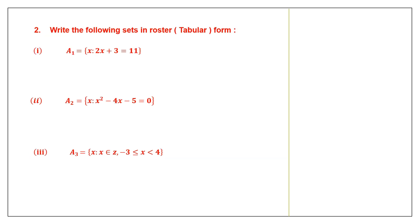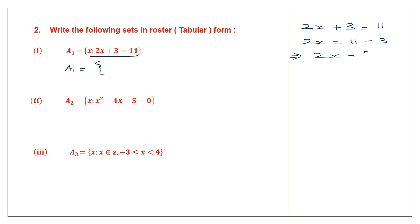Question 2. Write the following sets in the roster form or tabular form. We write the name of the set and put elements in curly brackets. Here it says X is such that 2X plus 3 equals 11. So 2X equals 11 minus 3 — because when it goes to the other side it becomes minus — so 2X equals 8. Therefore X equals 8 by 2, which is 4. The element of this set is only 4.